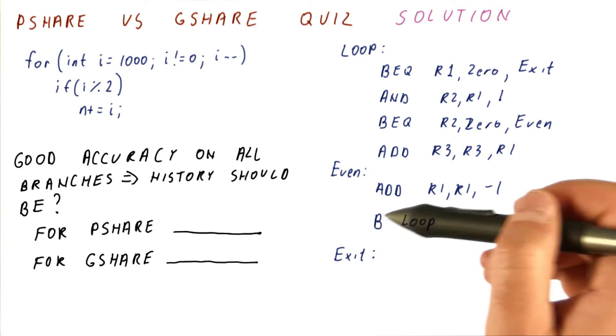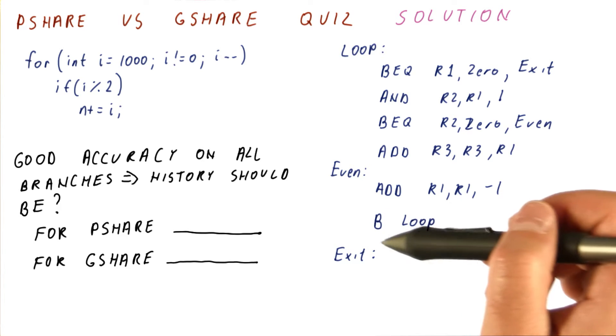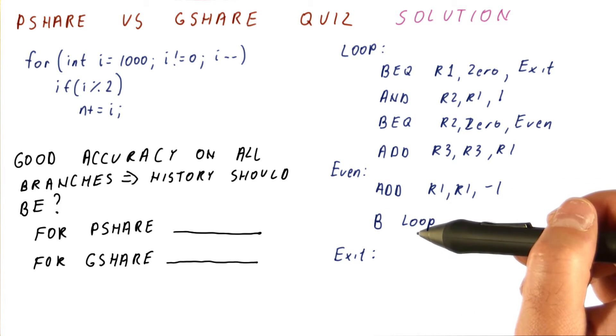This branch here is easily predictable even without any history. So for this one, any history will work.